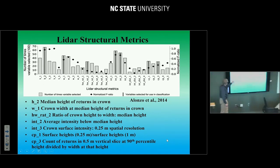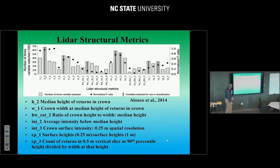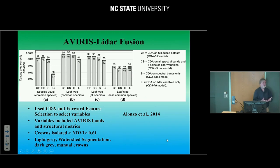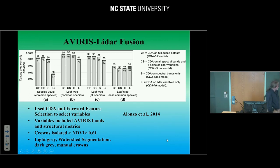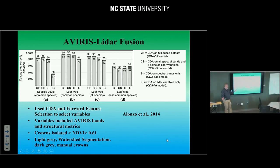Mike pulled up a large number of LiDAR structural metrics and ran F statistics to figure out which were most significant as a function of species. He ended up finding seven key metrics — including median height of returns in crown and some more obscure ones like surface height at 0.25 meter divided by surface height at 1 meter. He used canonical discriminant analysis — which we found to be the most accurate of all the classifiers — with forward feature selection. Showing CF (CDA on all Avaris wavelengths plus all LiDAR metrics), CS (all spectral bands plus the seven select LiDAR bands), S (spectra alone), and Li (LiDAR alone), these three approaches are all pretty similar in accuracy.